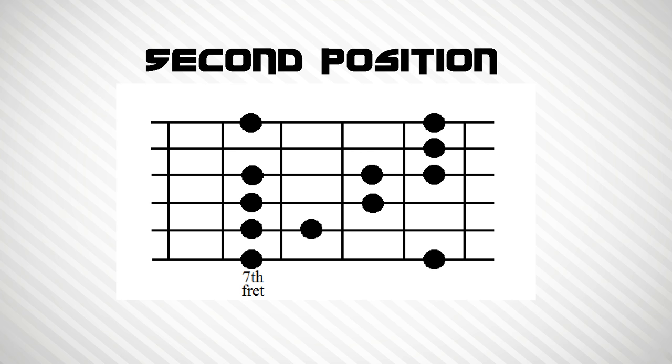And here's the second position, starting on fret number seven. The only tricky bit here is using your pinky to do a finger roll on the G and B strings.